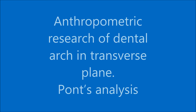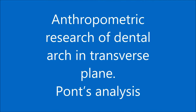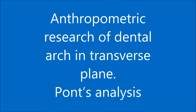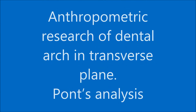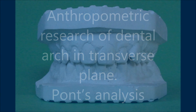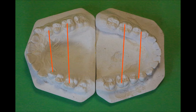Anthropometric research of the dental arch in the transverse plane. PON's analysis. PON established that there is a relation between total width of 4 maxillary incisors and the width of the dental arch in the premolar and molar region.